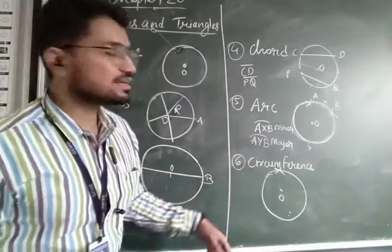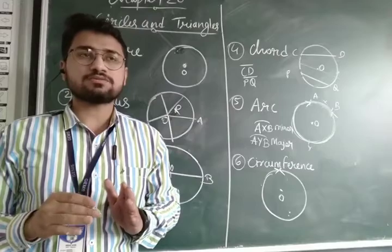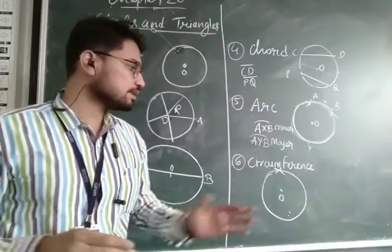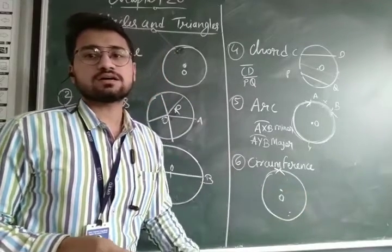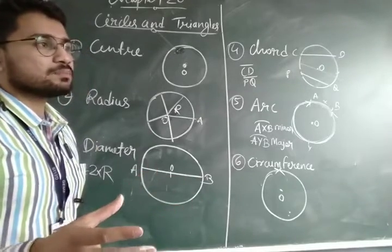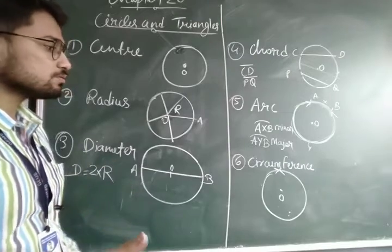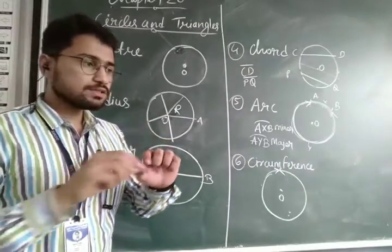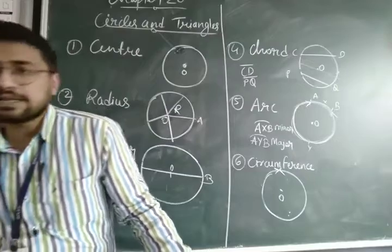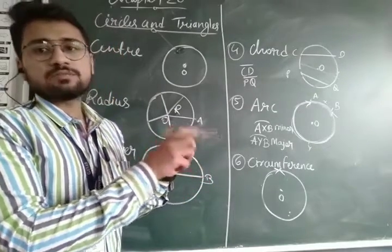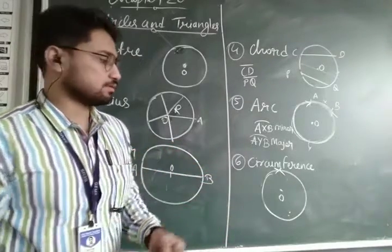Now what is circumference? Just like the perimeter — the sum of all the sides of a polygon is known as perimeter — similarly, the total length of the boundary of the circle is known as the circumference. Just like imagine there is a bangle of your mother and you want to measure its length. You will take one thread, place it along the bangle, and measure the length of that thread with a scale, and you will get the length of the bangle. This is called the circumference.